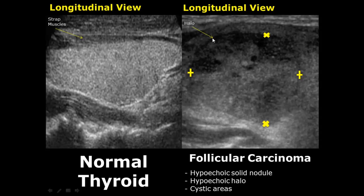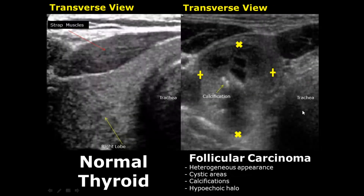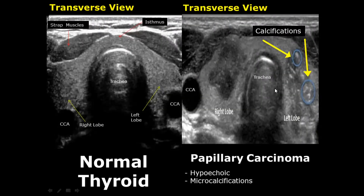Follicular carcinoma will have a hypoechoic halo, a hypoechoic nodule, and can have some cystic areas. These appearances overlap with other conditions, so we cannot confirm it on ultrasound alone. Here is a transverse view of follicular carcinoma also containing calcifications. You can see a thin hypoechoic halo and cystic areas.